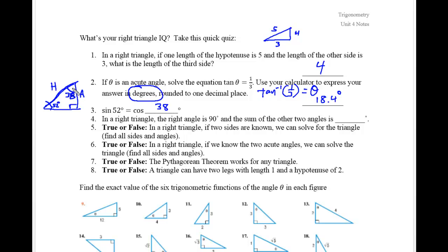From that perspective, cosine is adjacent over hypotenuse — the same ratio A over H. So the sine of 52 degrees equals the cosine of 38 degrees. In a right triangle, the right angle is 90 degrees, and the sum of the two other angles is also 90 degrees, since all triangles add up to 180 degrees.